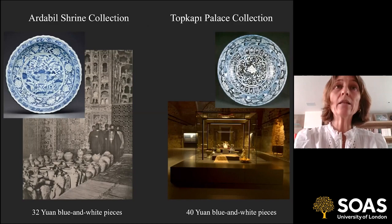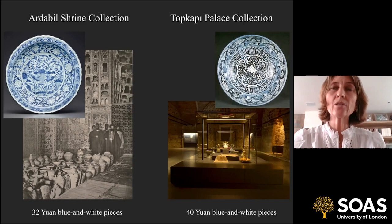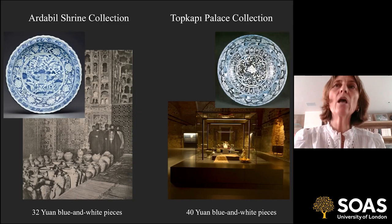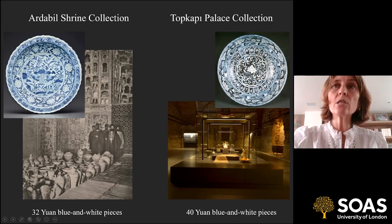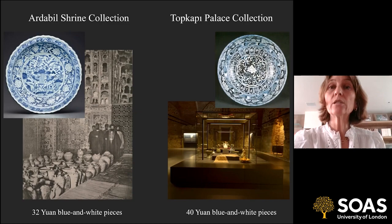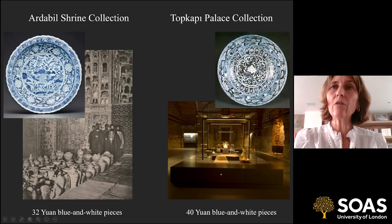The most famous collection is the Ardabil Shrine collection — Chinese ceramics given to a very important holy place by Shah Abbas in 1608. What he gave was the royal Persian collection, which had been accumulated as diplomatic gifts from the Timurid period — so representing about 100 years of collecting — and among those were 32 Yuan blue and white pieces. The collection is now mostly on display in Tehran. The final collection, which some may have seen in Istanbul, is now on display in the kitchens of the Topkapi Palace, with a substantial collection of Yuan pieces.